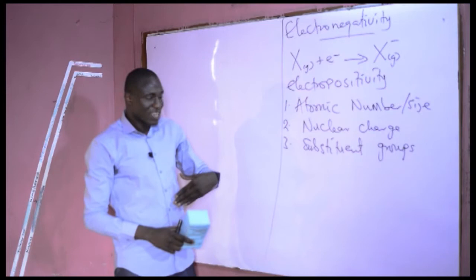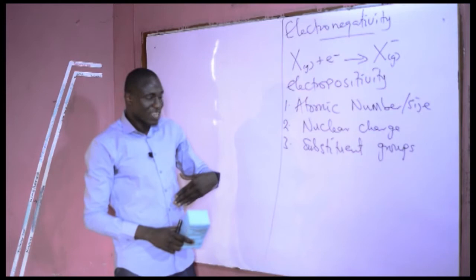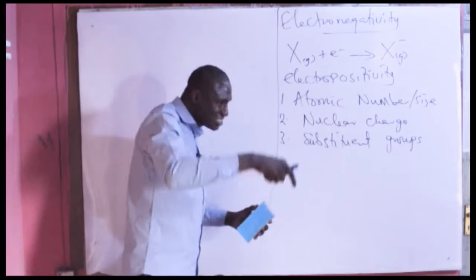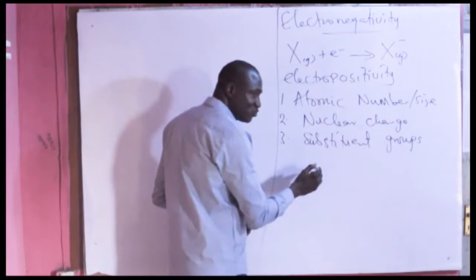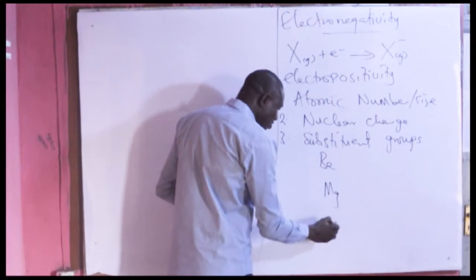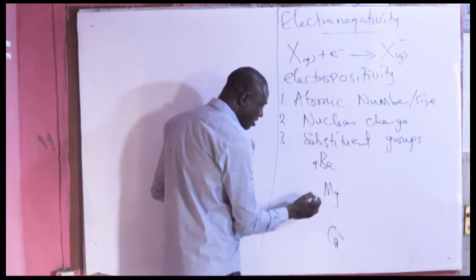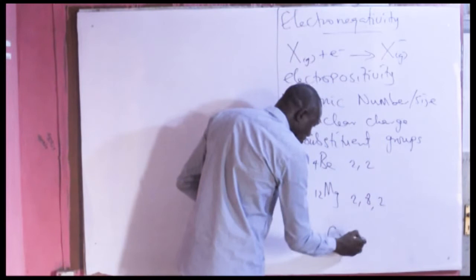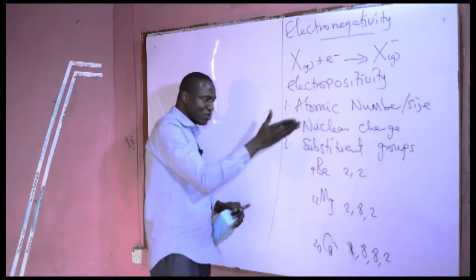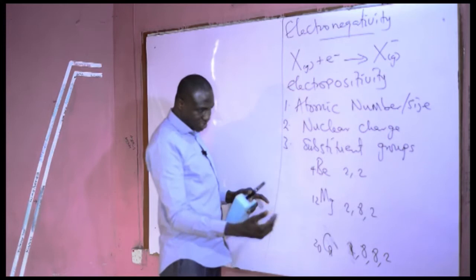As we go from top to bottom down the group, there is an increase in atomic number and also an increase in effective nuclear charge, but the effect of nuclear charge is cancelled by the increase in the size of the atom due to the addition of another shell. For example, in Group 2 — beryllium (atomic number 4), magnesium (12), and calcium (20) — with electronic configurations 2,2; 2,8,2; and 2,8,8,2 respectively — as you go down the group, the size increases: beryllium has 2 shells, magnesium 3, and calcium 4.